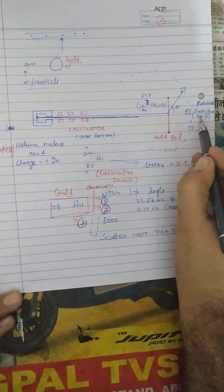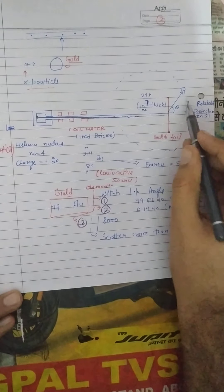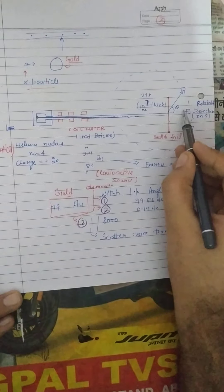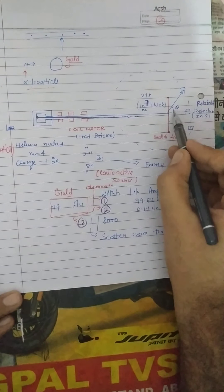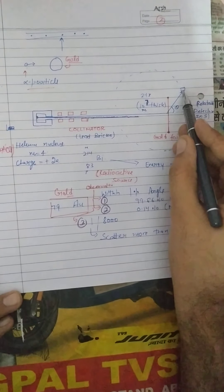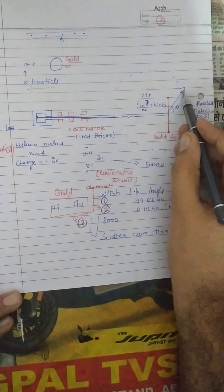So here is a rotatable detector that is of zinc sulfide that is movable. Most of the particles go straight but the particles that do not go straight that turn through an angle, zinc sulfide detector will count how many alpha particles are there.